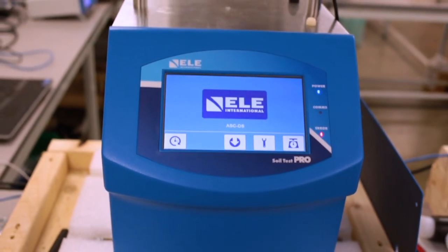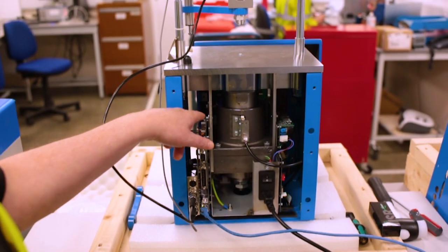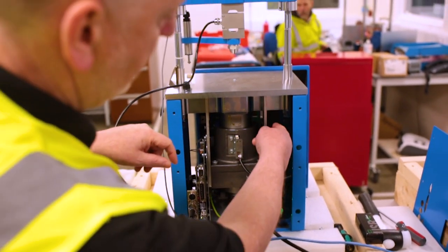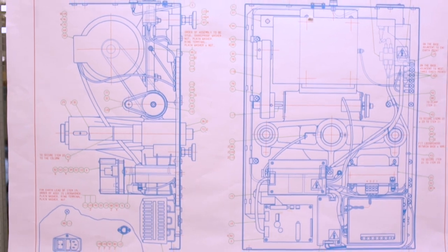Recently, we've started 3D printing some of our parts, and this is new to ELE. By exporting the files from the models, it's enabled rapid turnaround. Instead of weeks for a plastic moulding, we've turned that around to days.